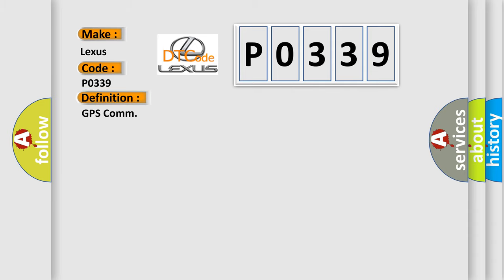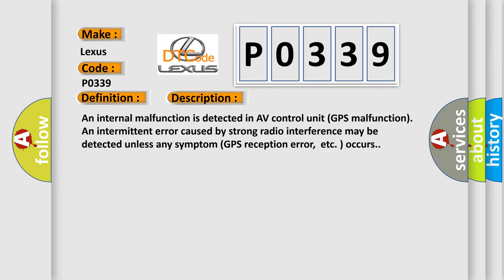The basic definition is GPS COM. And now this is a short description of this DTC code: An internal malfunction is detected in AV control unit.